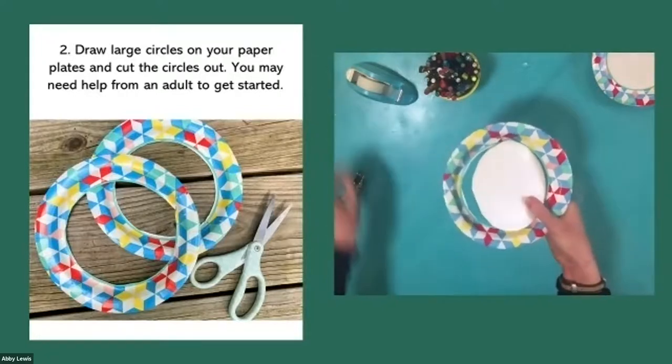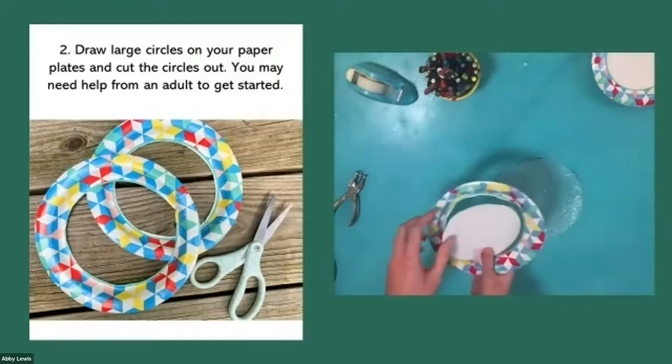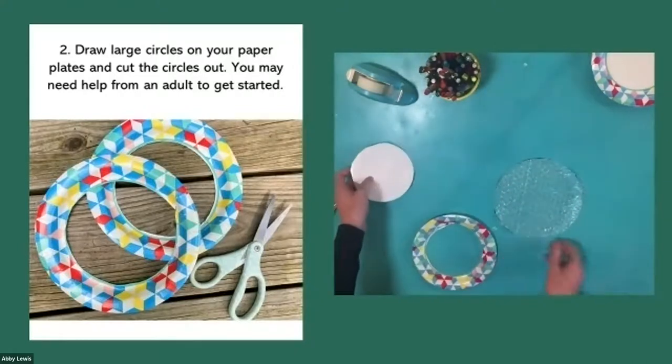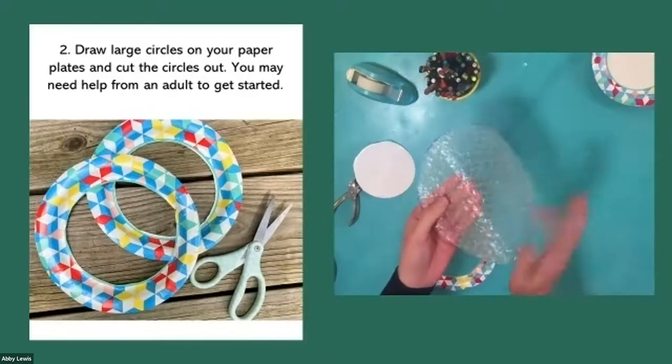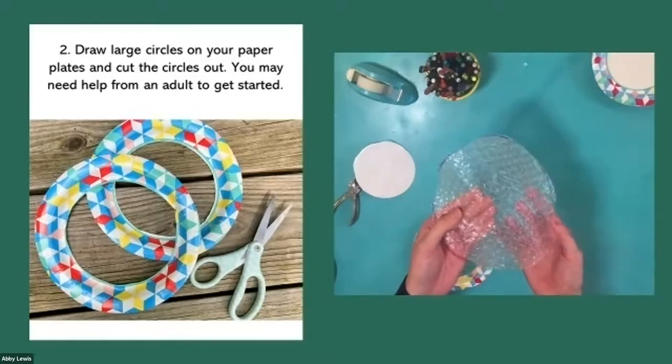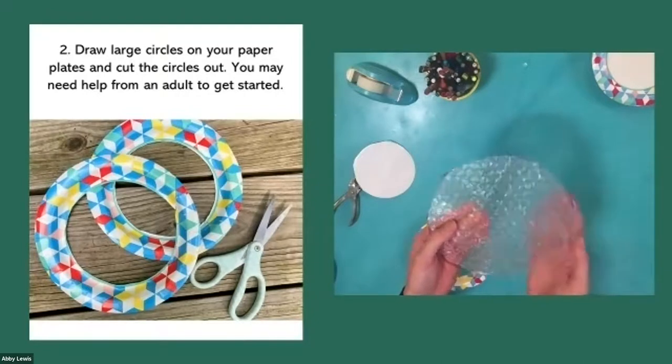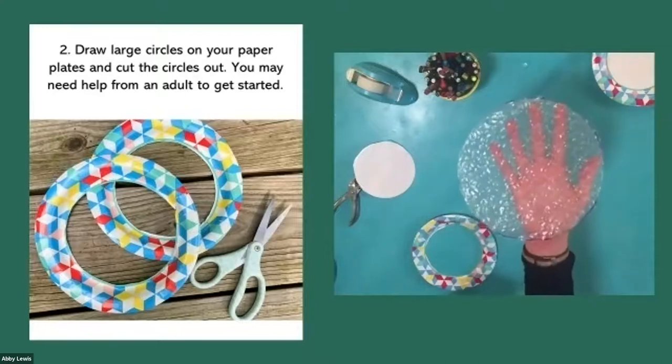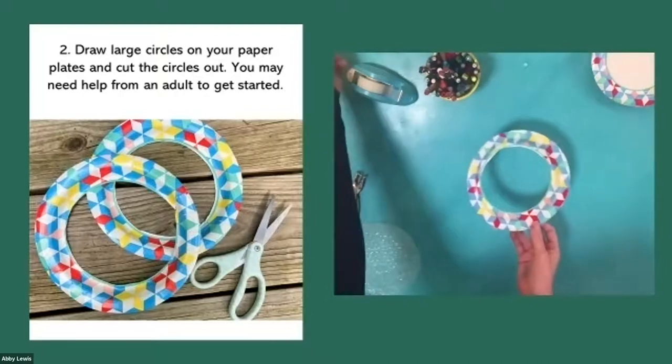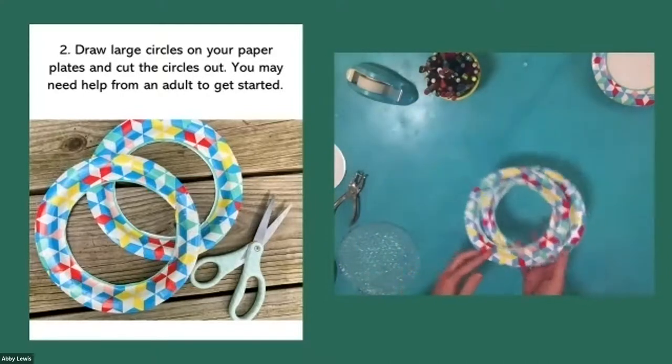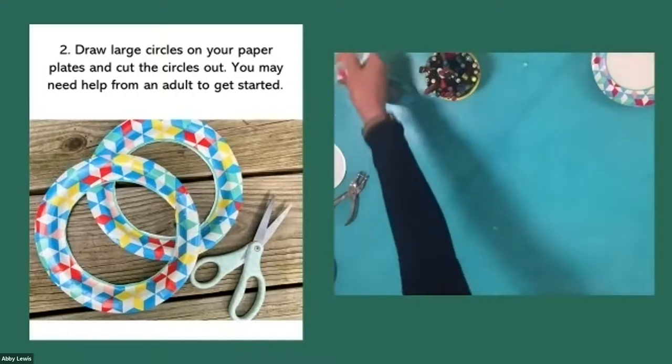And Abby we have a question from the chat. Eliana wants to know can we use different types of wrap. That is a great question and you certainly can. This is whatever I had that came in a package I got. The bubbles are really small but if they're bigger that's totally fine. Different flies have different numbers of lenses so that's totally cool. So now that we're going to cut out two paper plates and two bubble wraps, once we have that ready we can go on to our next step.